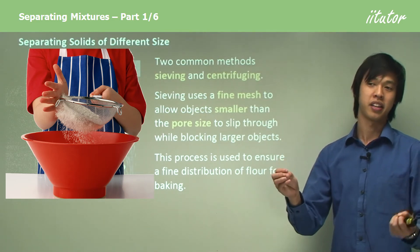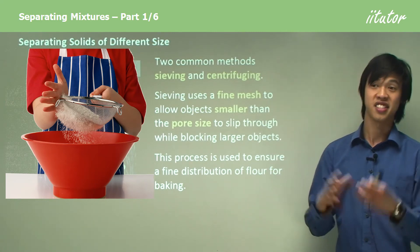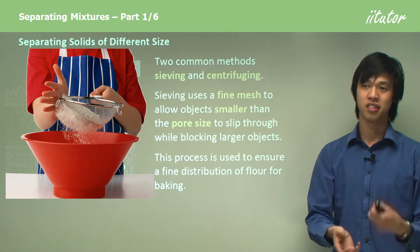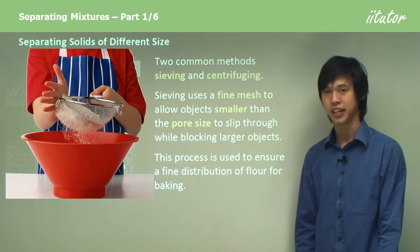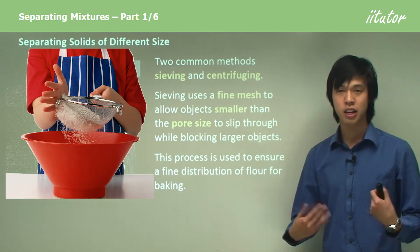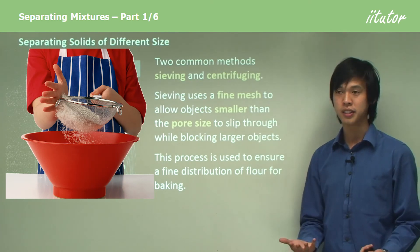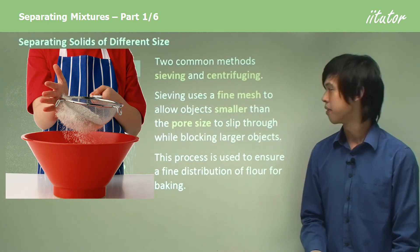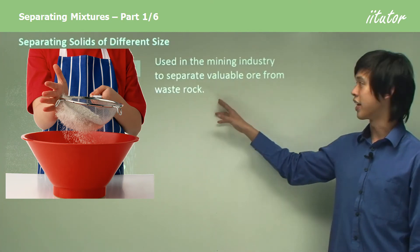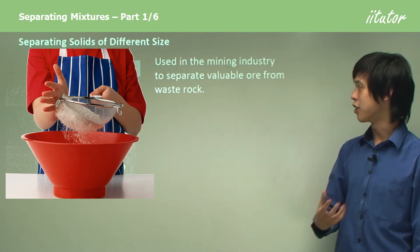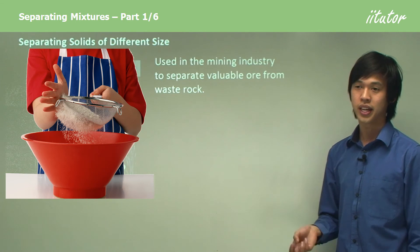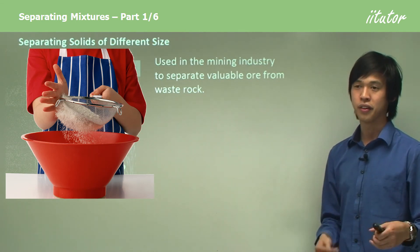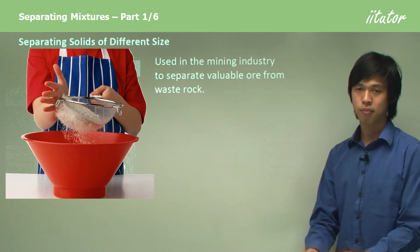The physical property we're exploiting with sieving is simply size — one particle is bigger than the other and can't get through the hole. As we go through these methods, try to think about what property is actually being exploited before I tell you; it'll help clarify what each process is doing. We can also use sieving in industry to separate valuable ores from waste rock — sieving out larger rocks that are useless from smaller, more valuable rock.